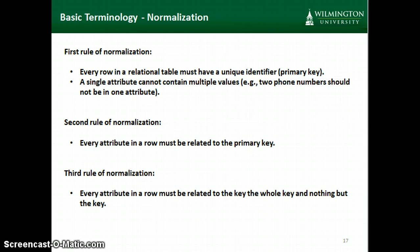The first rule is that every row has to have a unique identifier — the primary key — and no single attribute can have multiple values. So we can't cram two employee IDs in the high school table or two phone numbers into the same row of the employee table.